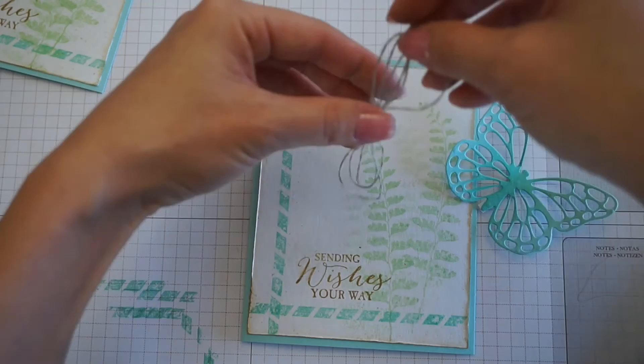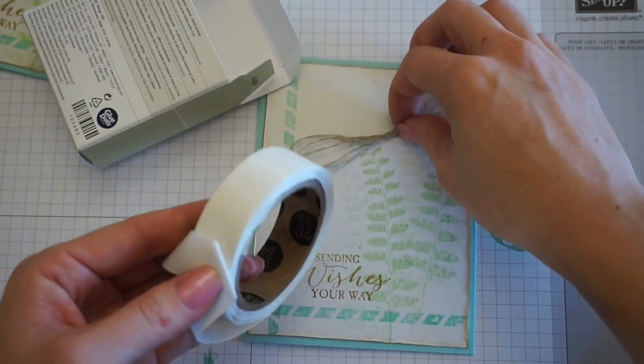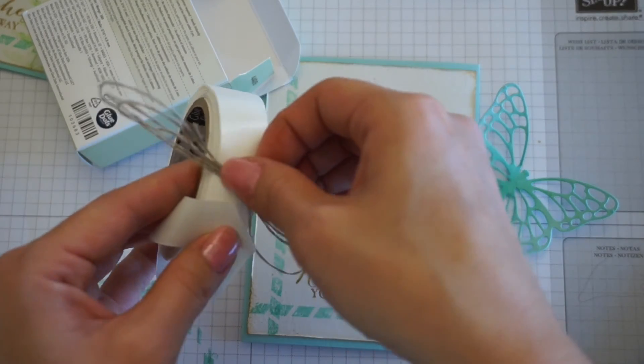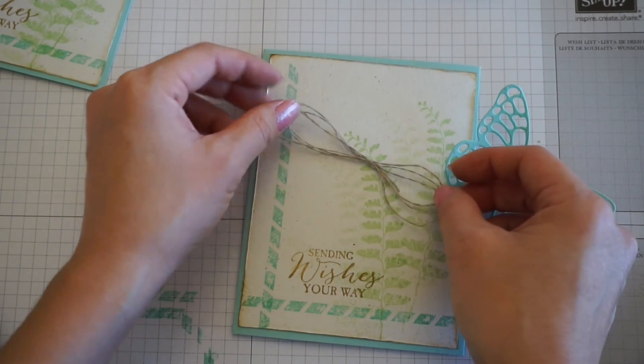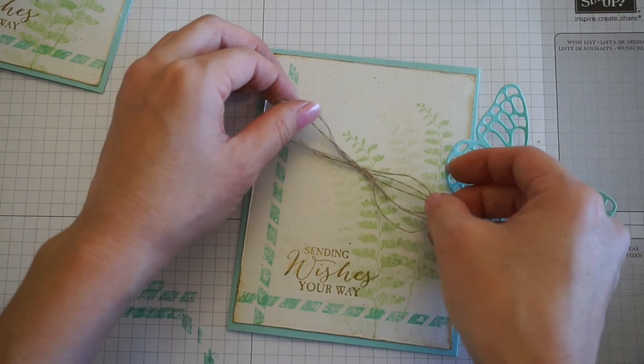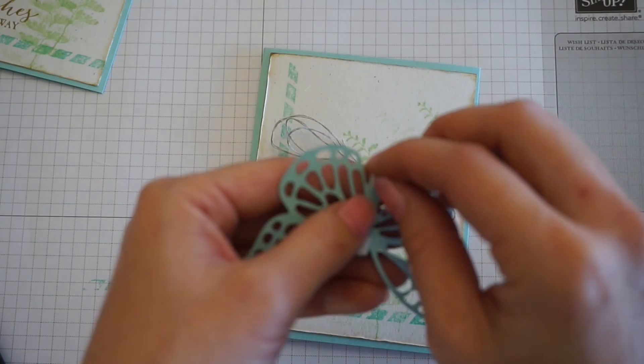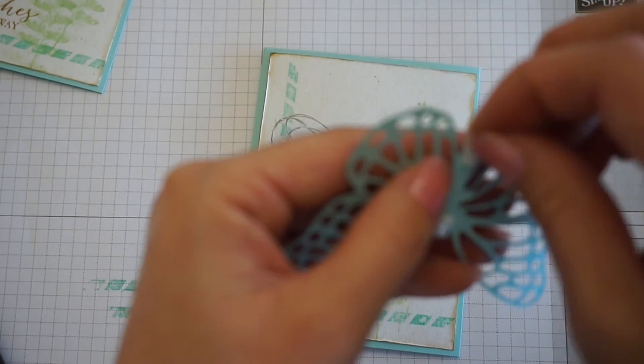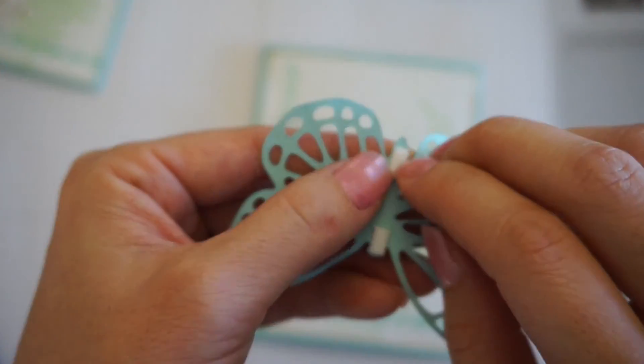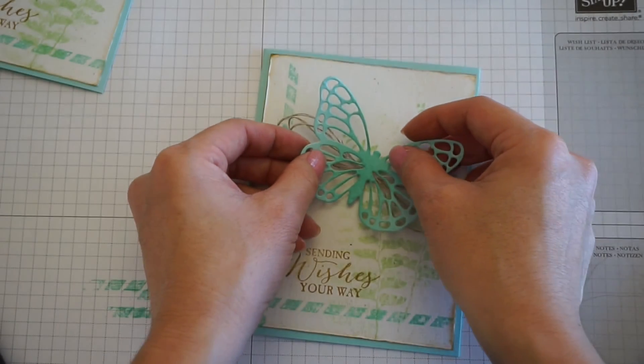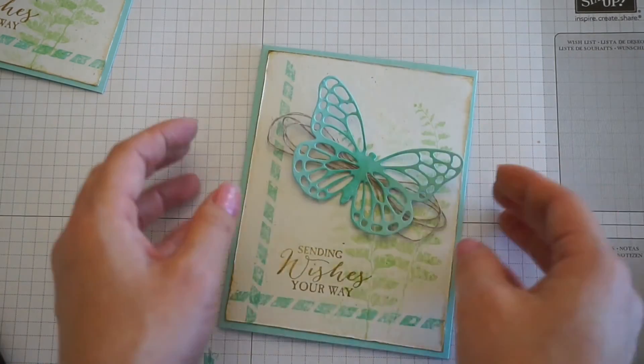For your linen thread bundle you want to get your mini glue dots. You want to take the backing off of your dimensionals, right over your linen thread bundle and that's it.